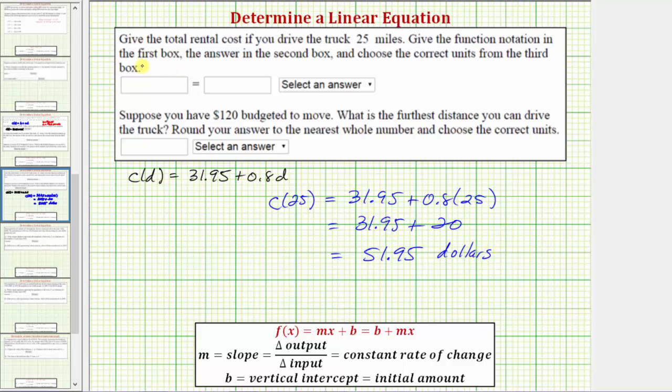We're asked to enter the function notation in the first box, which is C(25) = 51.95, and we select the units of dollars.